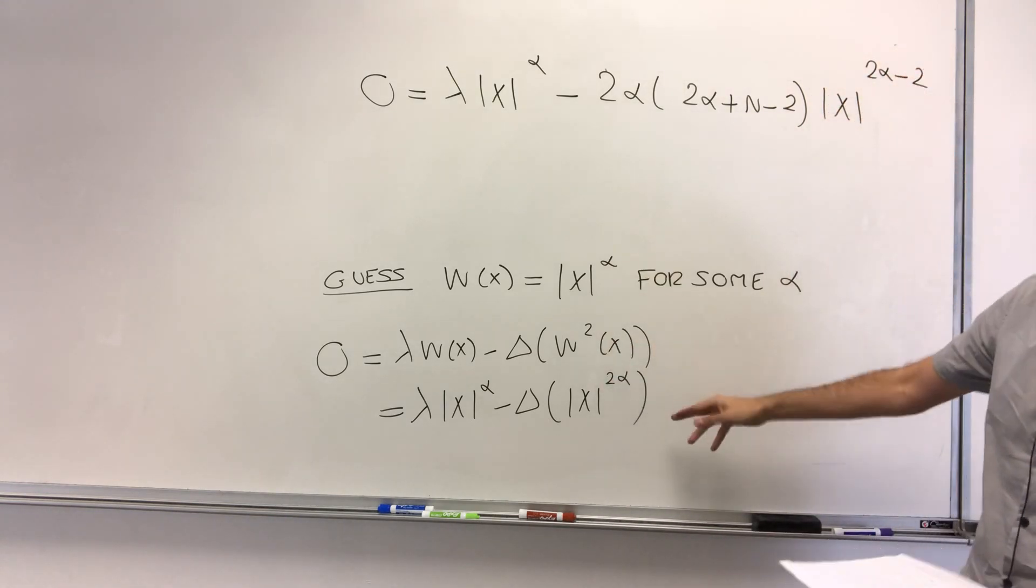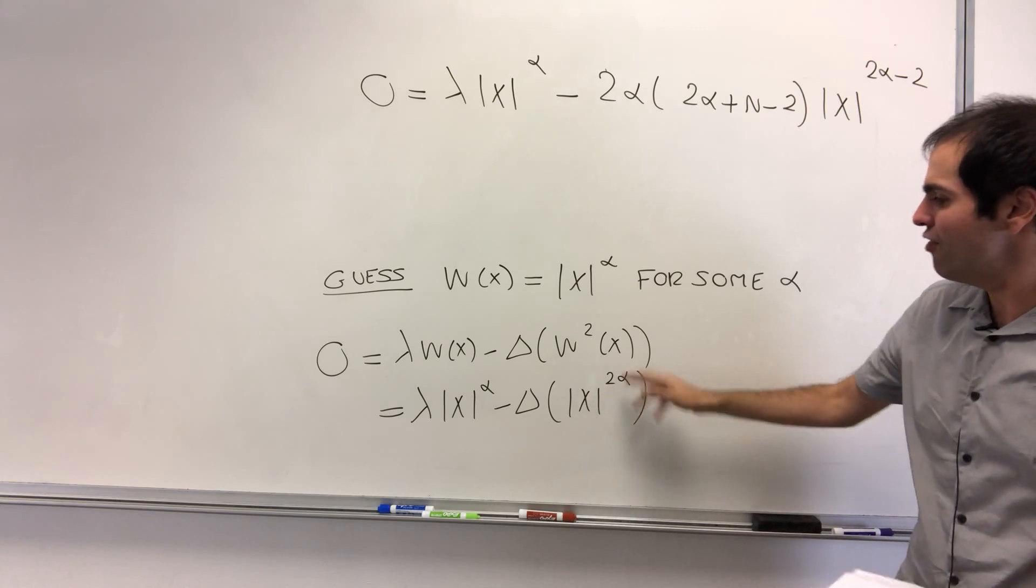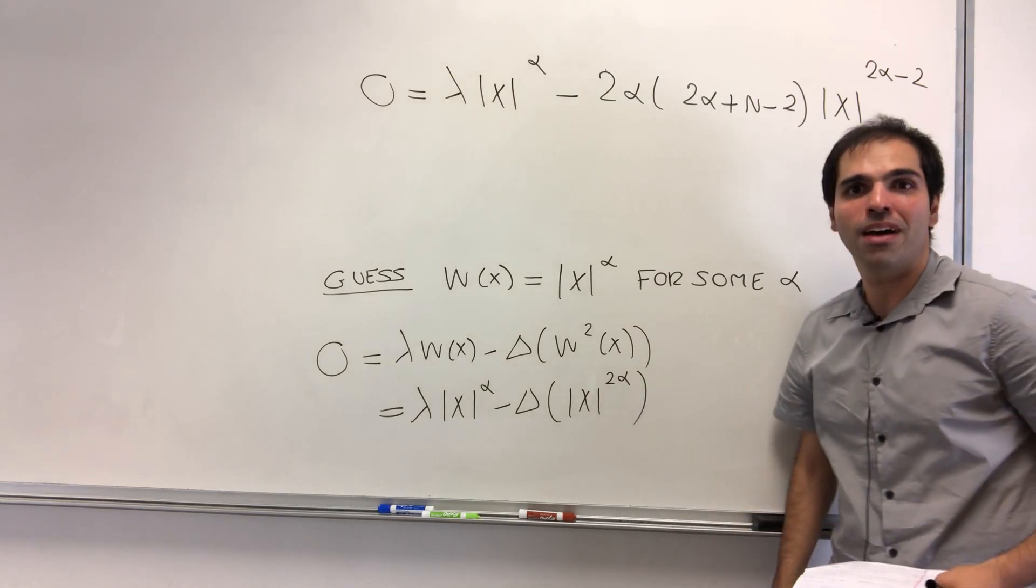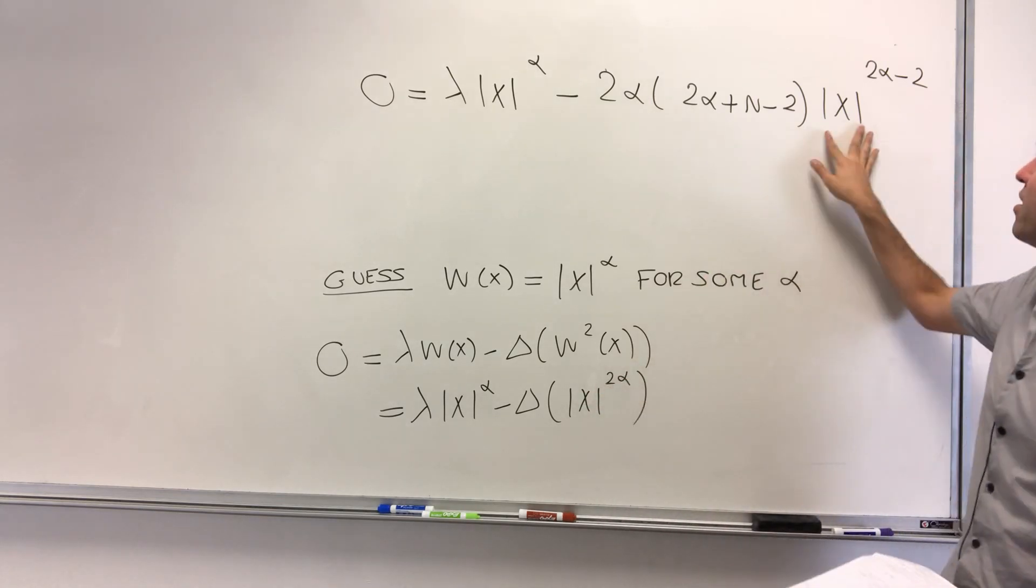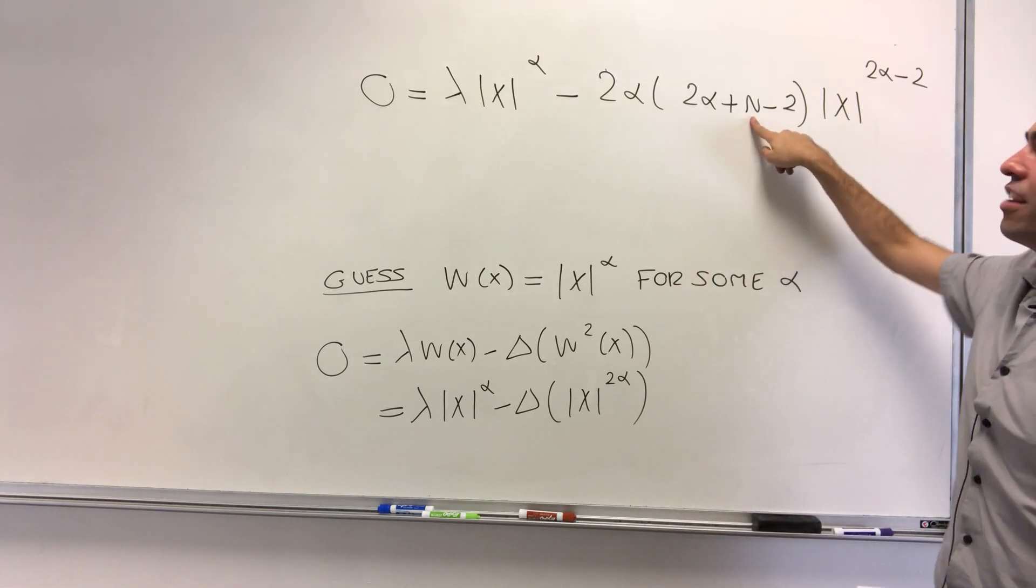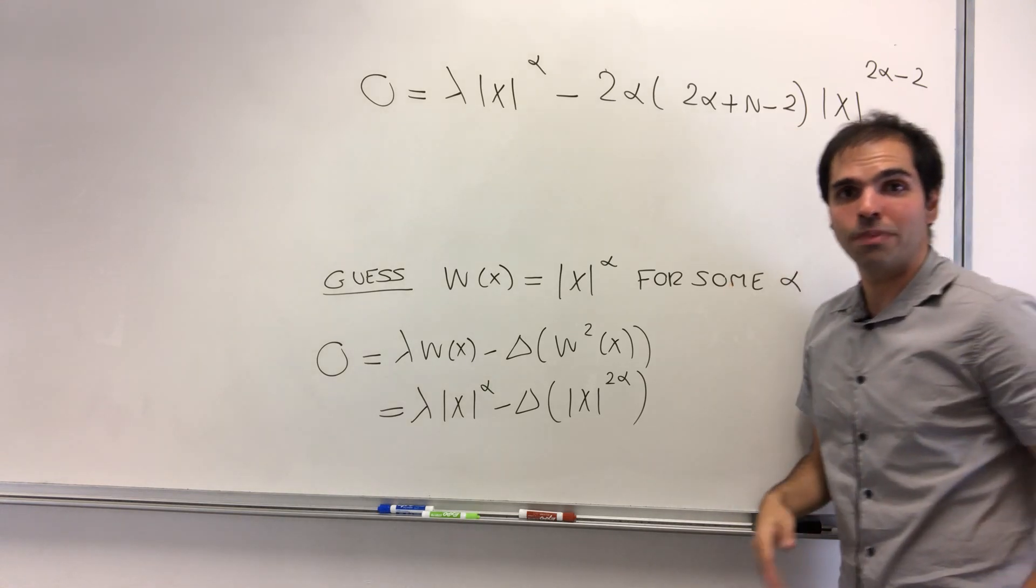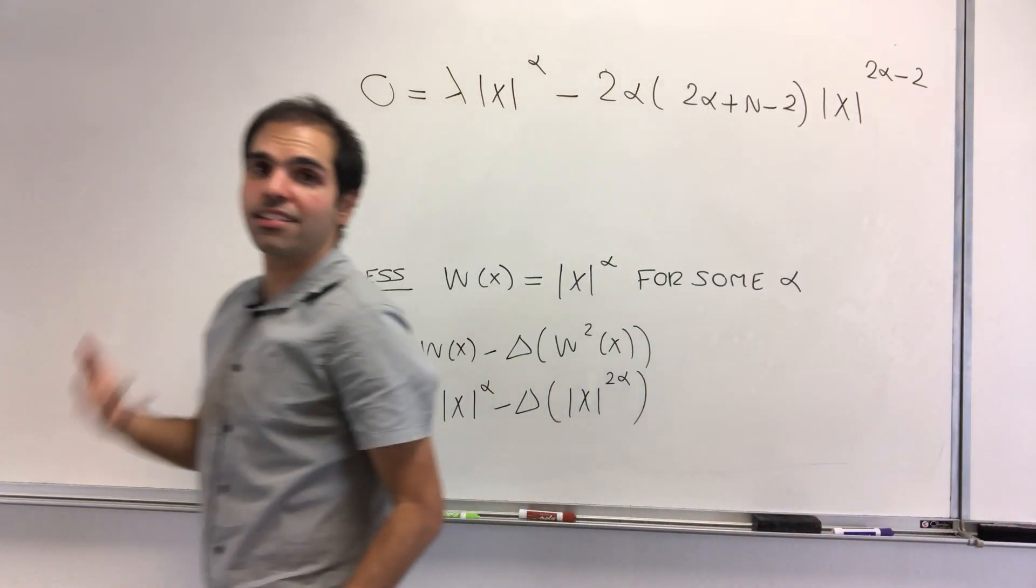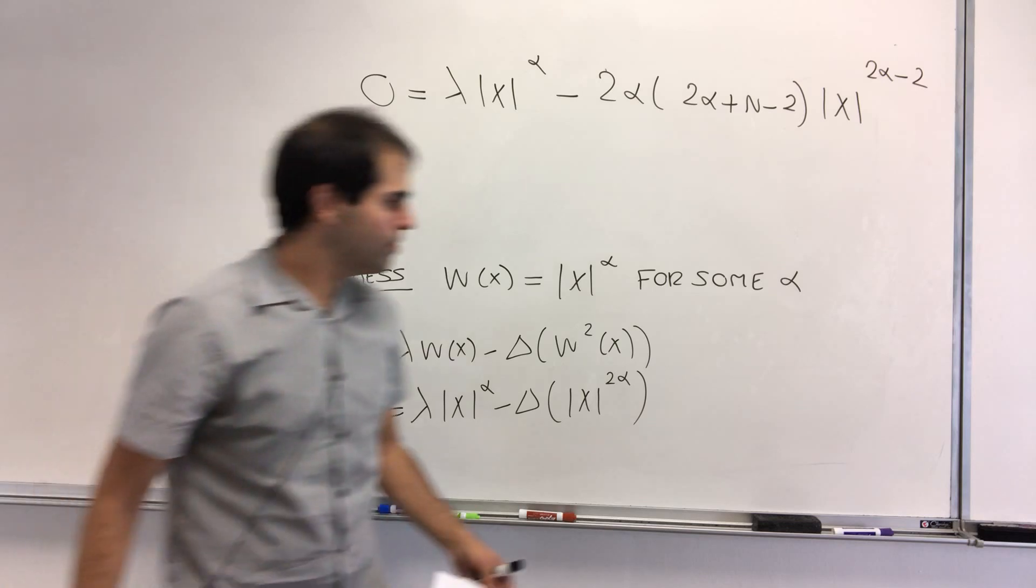So it's not quite what you think. It's not like 2 alpha times 2 alpha minus 1 times this because of the absolute value makes it a bit harder to evaluate. And by the way, here, n is the dimension of your space. It's like how many x variables there are.